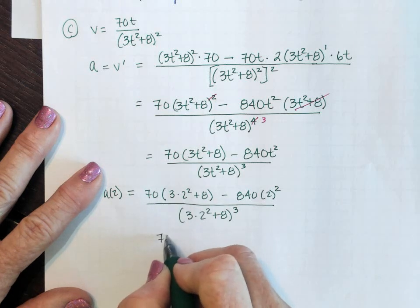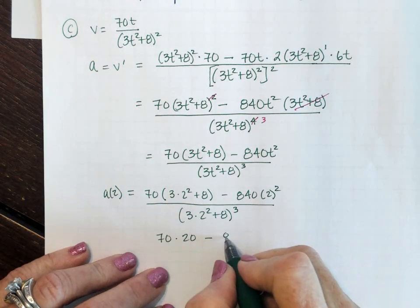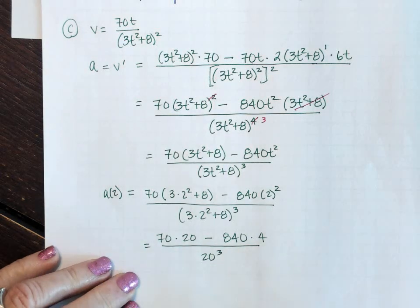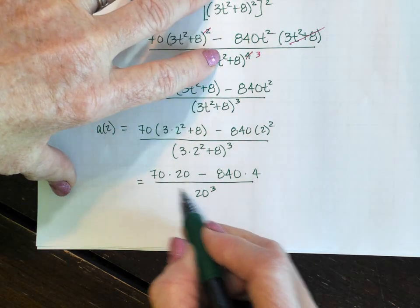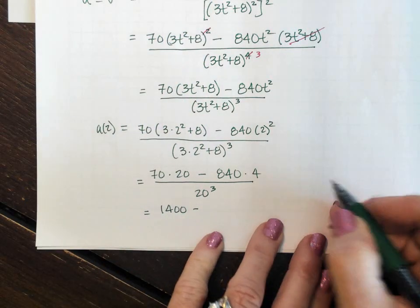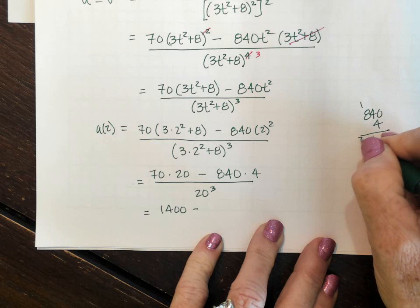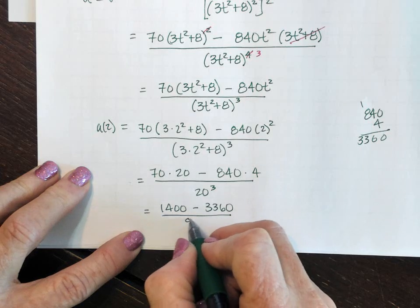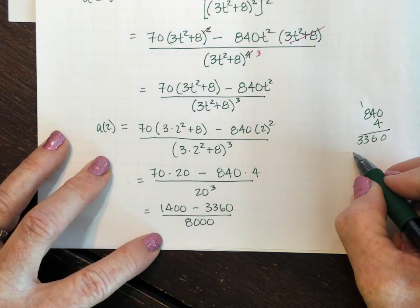Let's see, I will take you through all of this. This is 70 times 20 minus 840 times 4, all over 20³. I am really surprised that they're giving this to you on a no calculator question because the arithmetic's not hard, it just takes time.